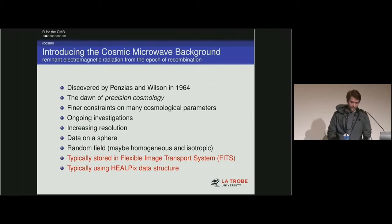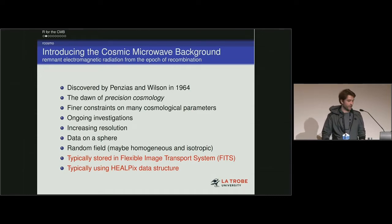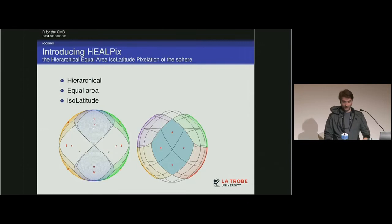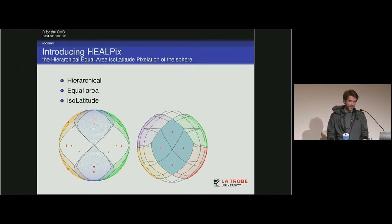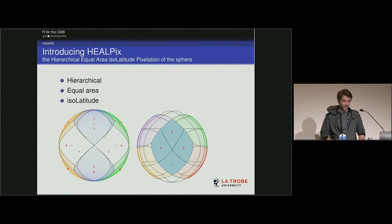Typically this data is stored in FITS (Flexible Image Transport System) files, which is standard for astronomical data, and delivered using the HEALPix data structure. HEALPix stands for Hierarchical Equal Area iso-Latitude Pixelation of the sphere. It's a self-similar refinable mesh — you start off with 12 base pixels.